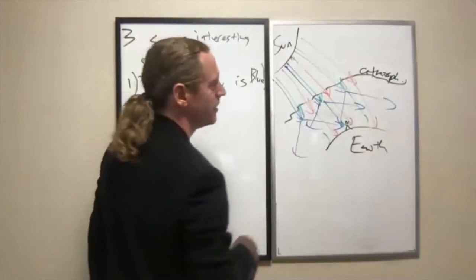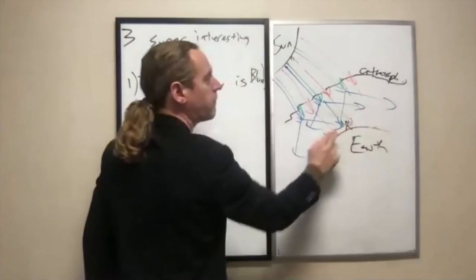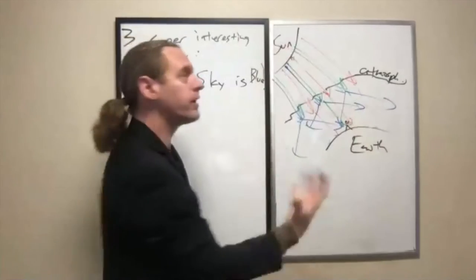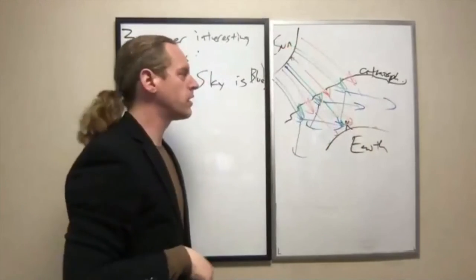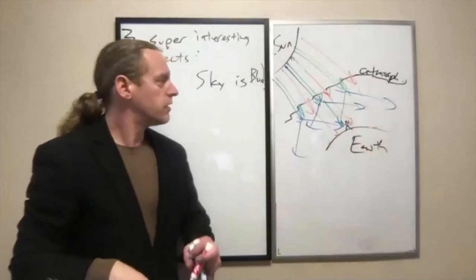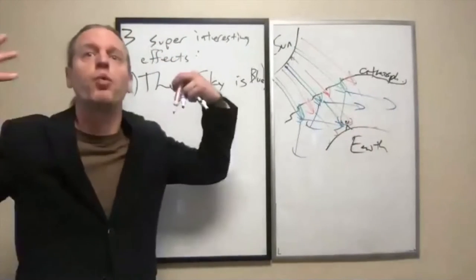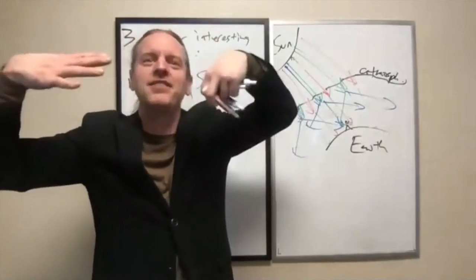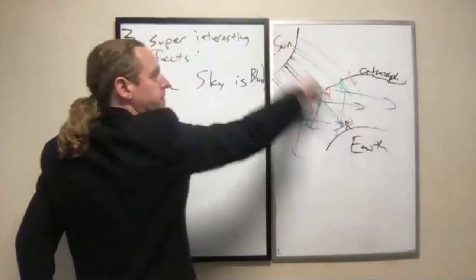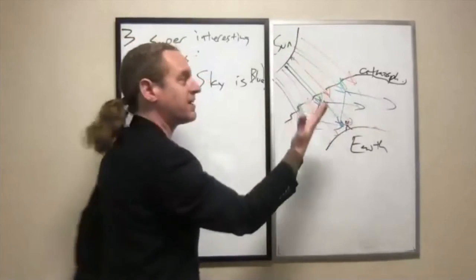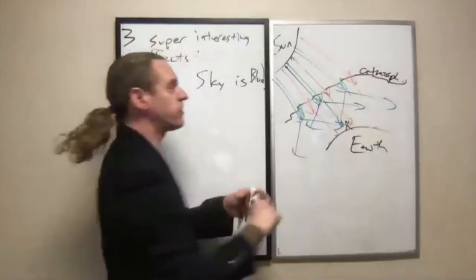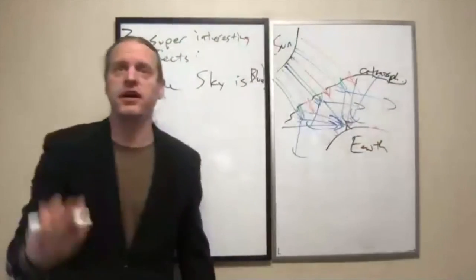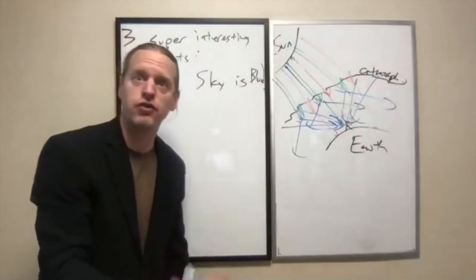Now it looks like a bit of a messy diagram, but here's the result. If we're that person there and we look up at the sky, we see the sun more or less as it appeared, except those blue wavelengths are missing. And that's literally why the sun looks yellow — the sun should look white if you were out in space, but those blue wavelengths have been chopped away from the direction of the sun, so it looks yellower than it should.